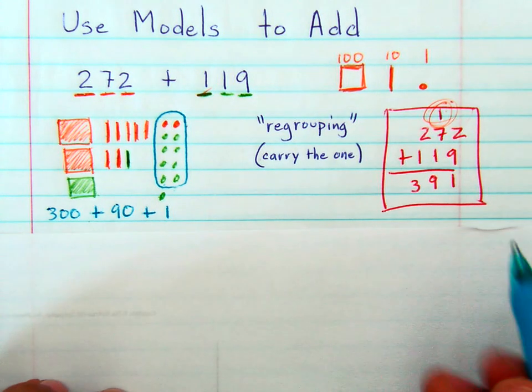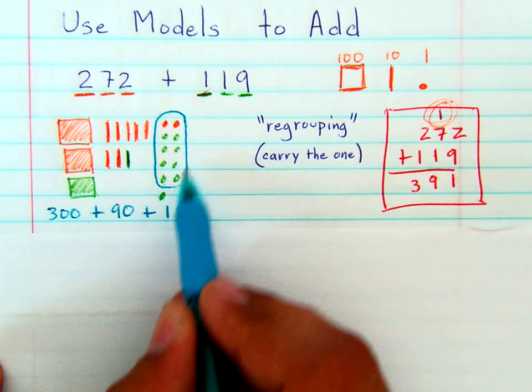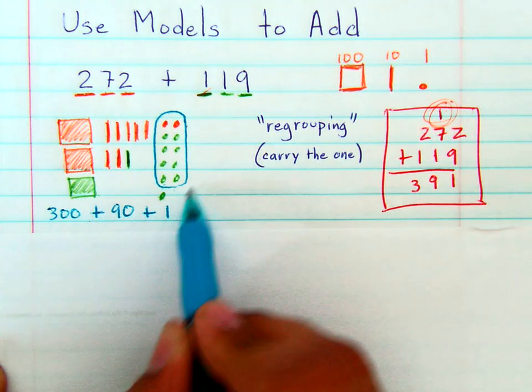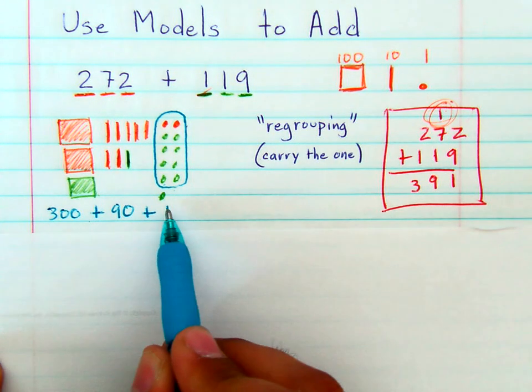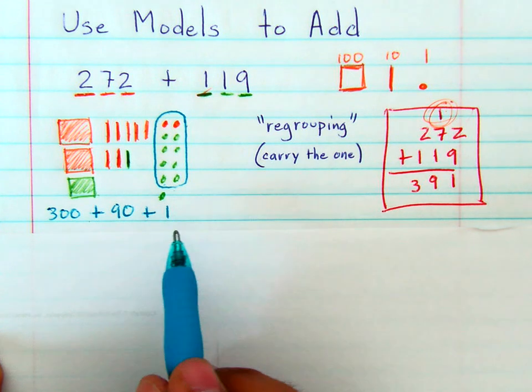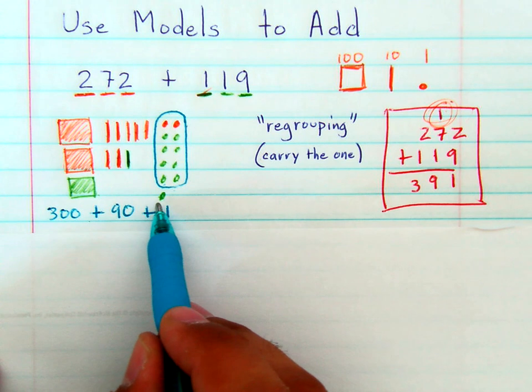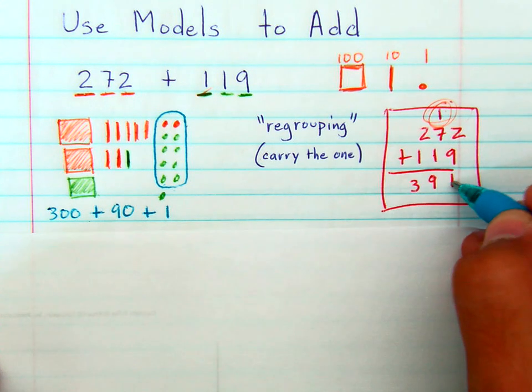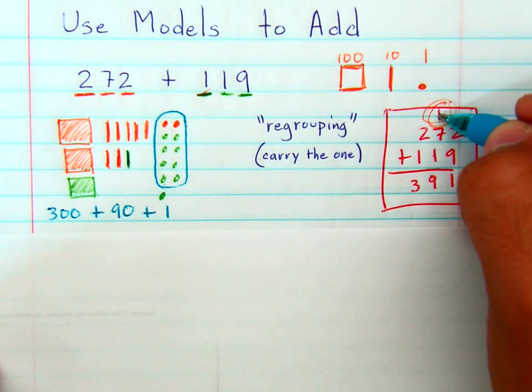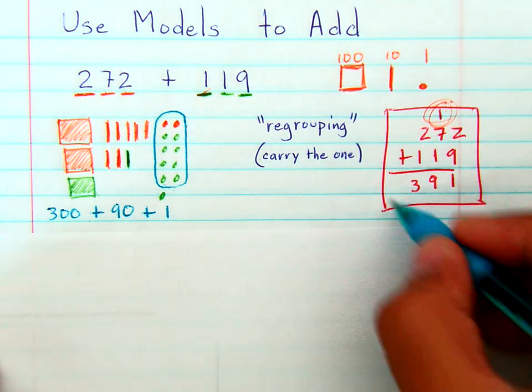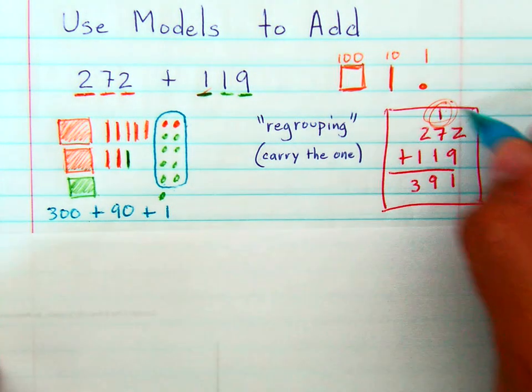Now again, I do not expect students to do this when they write checks. I don't want them to use models when they're solving complicated math. I only want them to understand visually why you carry the 1. The standard algorithm, this is what students will be using forever more.